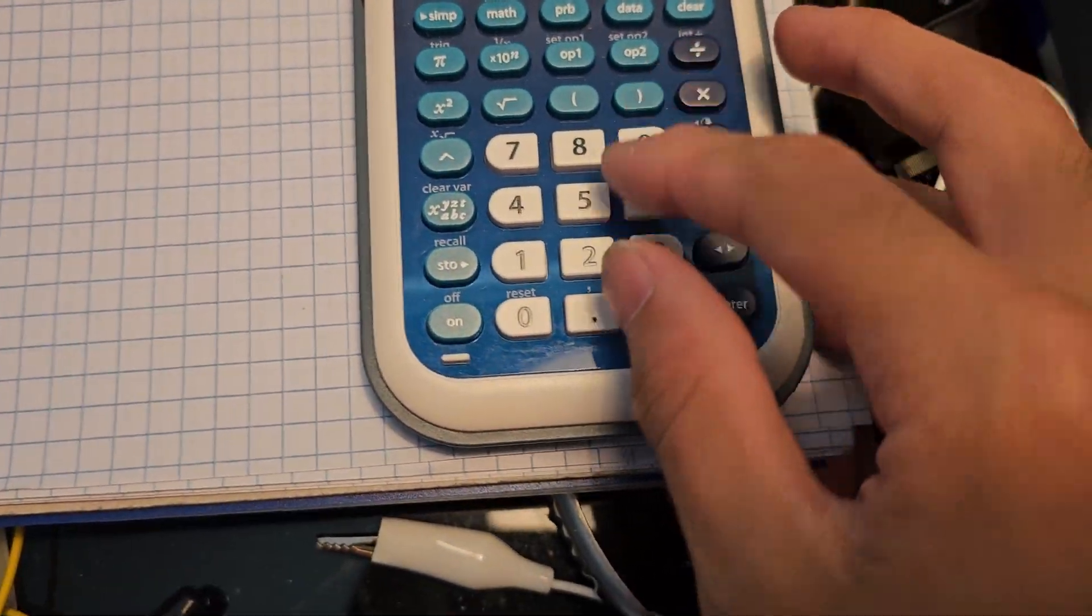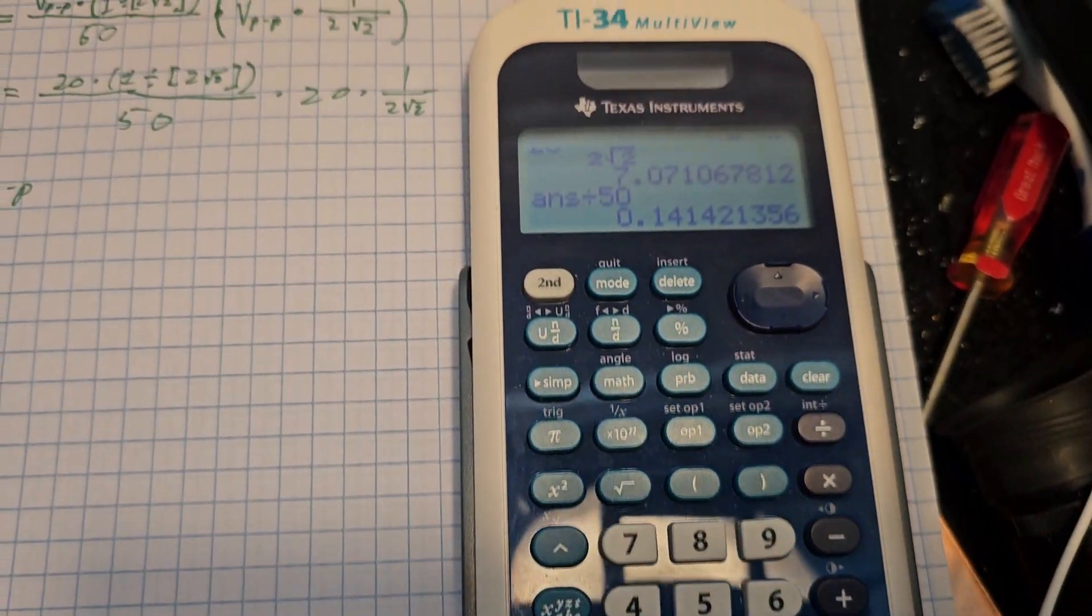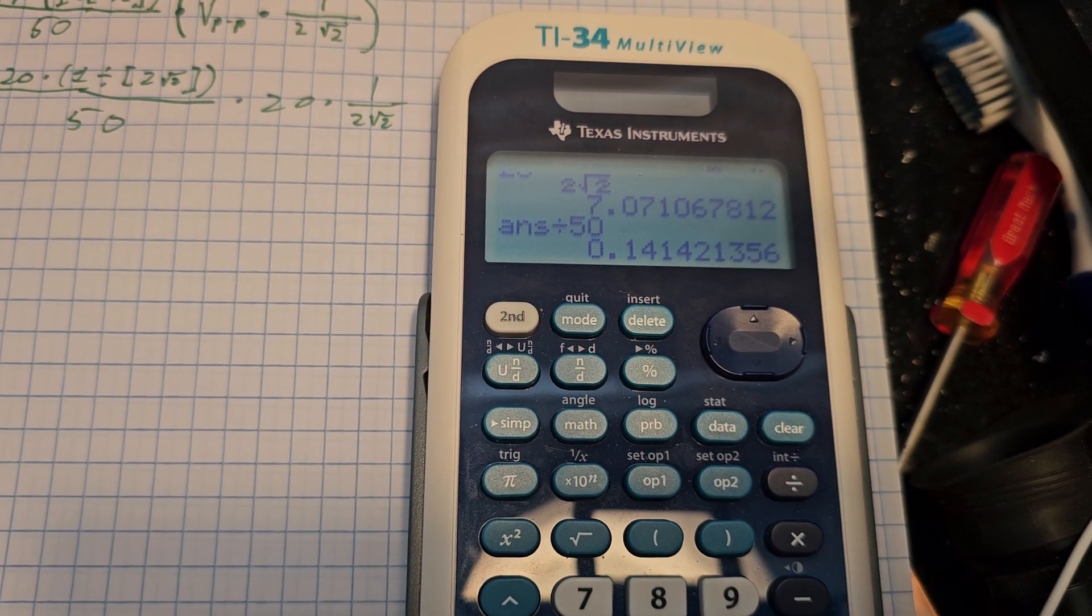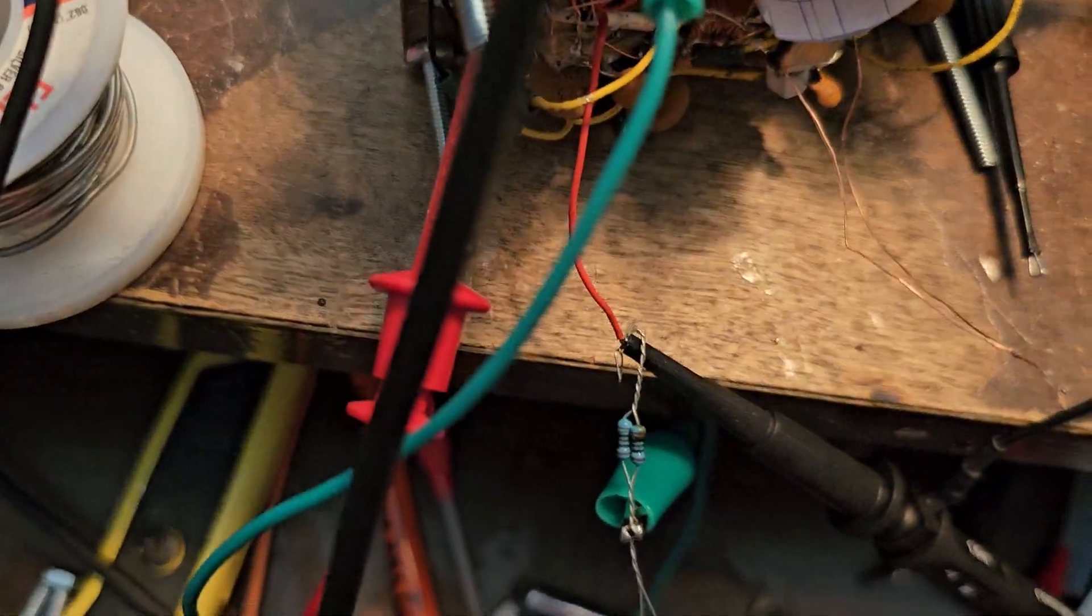And we're going to divide this by 50 and we get that. So we have around 140 milliamps flowing through that resistor there.